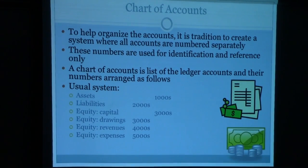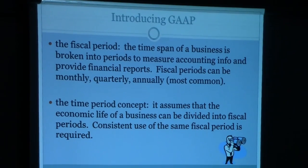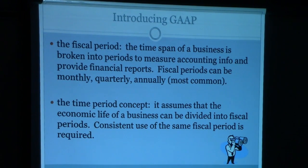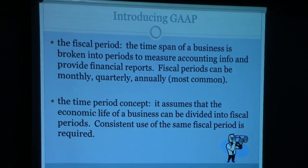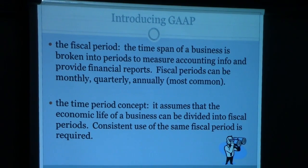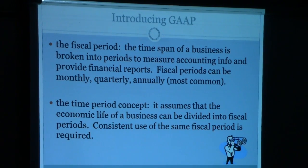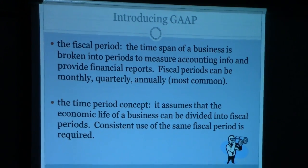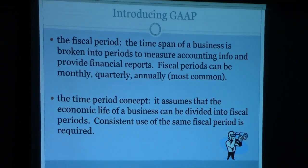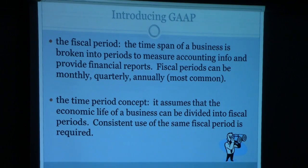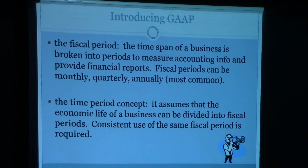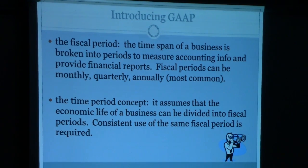Moving on to GAAP — generally accepted accounting principles. The fiscal period is how we measure different things in accounting. The balance sheet is a snapshot, but the income statement represents revenues and expenses during a fiscal period. A fiscal period can be a month, a quarter, or a year. Generally it's annual — you close the fiscal period at year-end and start a new one.